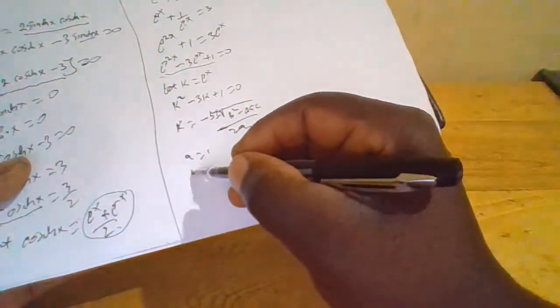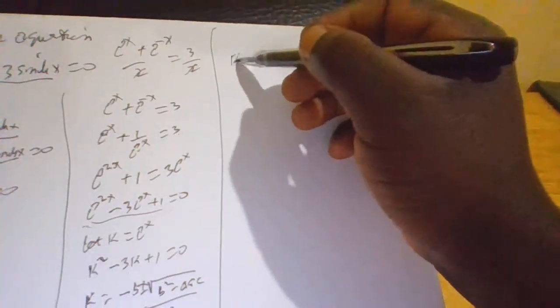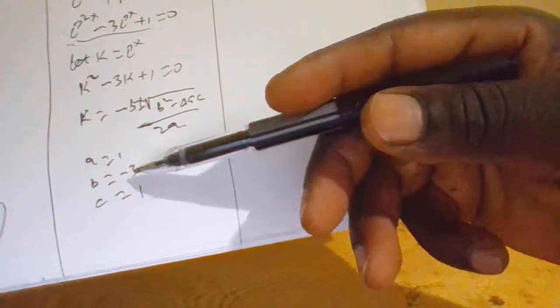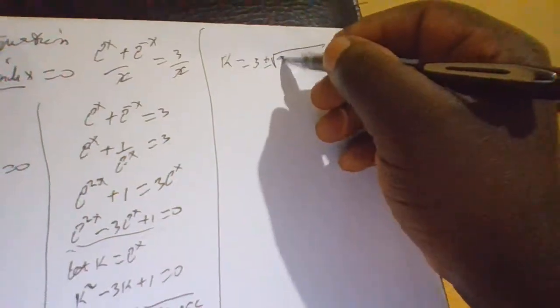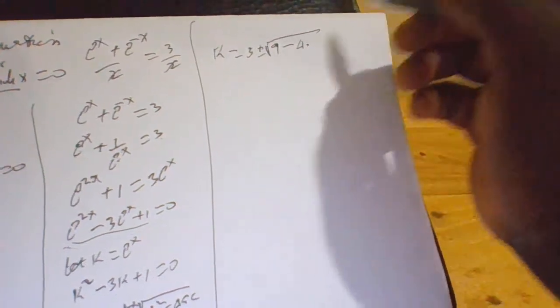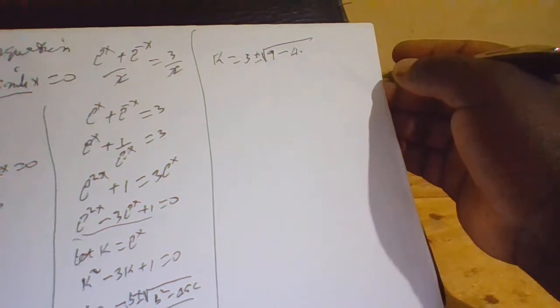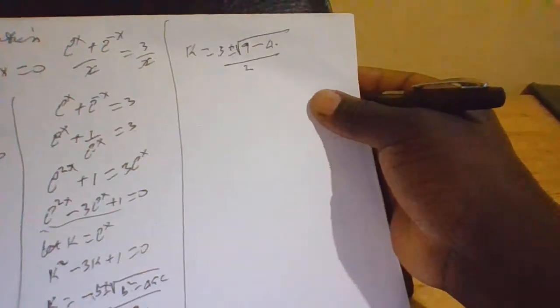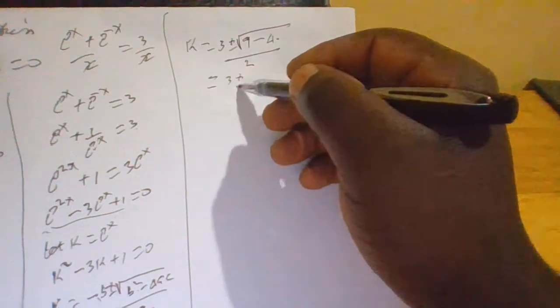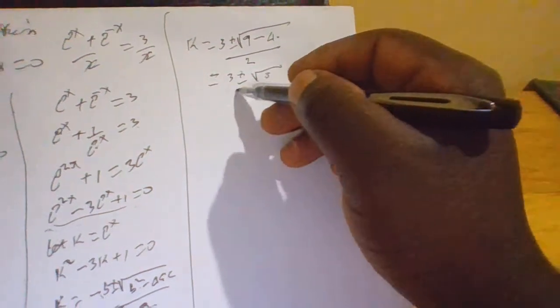Our a equals 1, our b equals negative 3, and our c equals 1. So k equals — since b is negative 3, negative b becomes positive — 3 plus or minus the square root of negative 3 squared, which is 9, minus 4 times 1 times 1, which is 4, all over 2 times 1, which is 2. This simplifies to 3 plus or minus the square root of 5, all over 2.